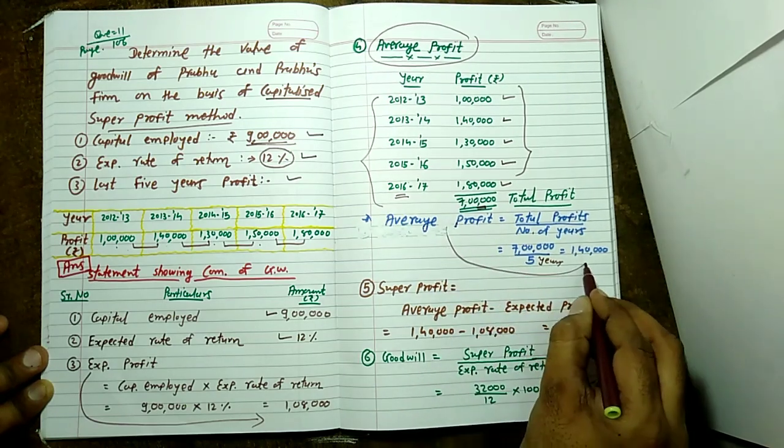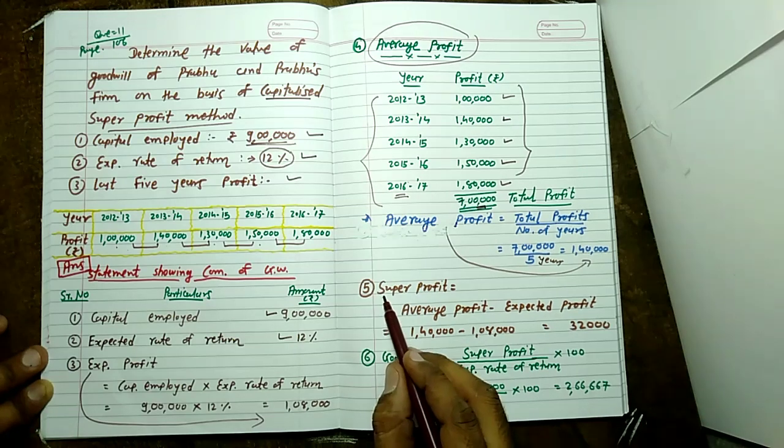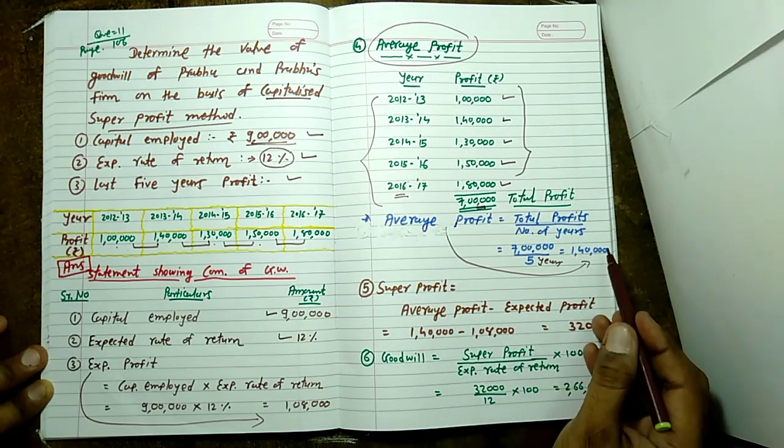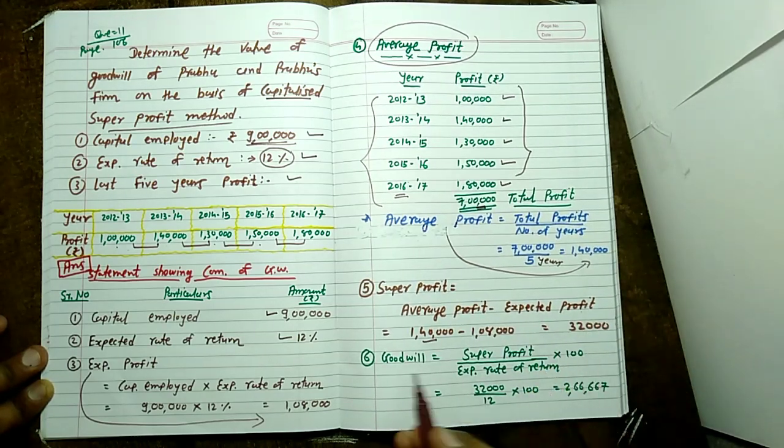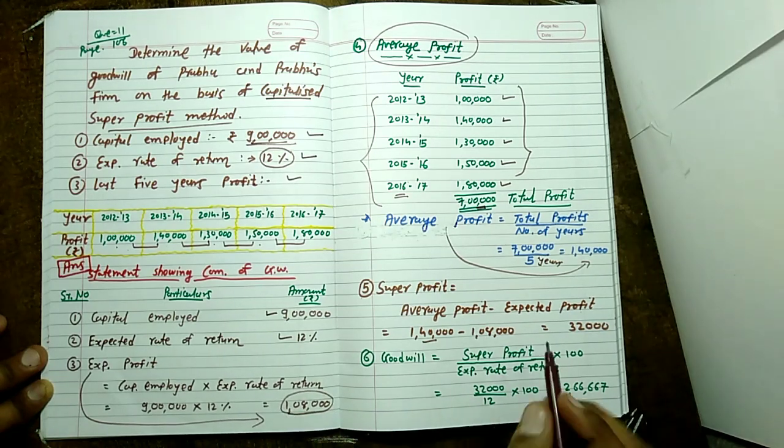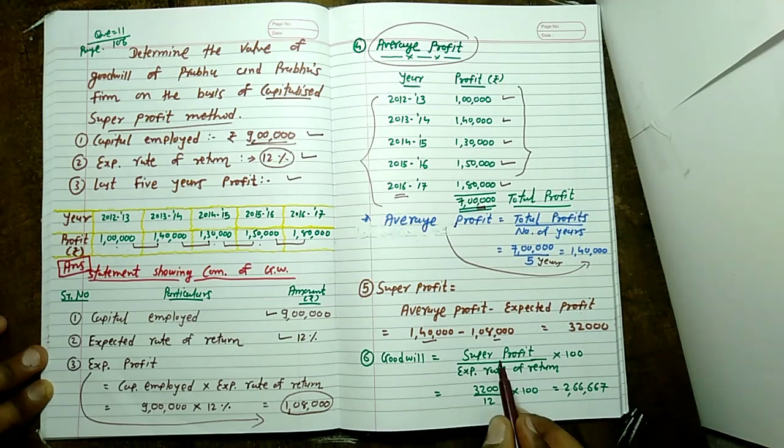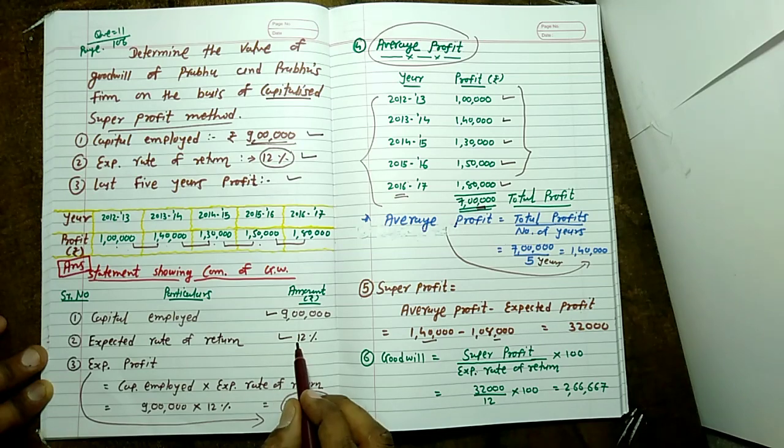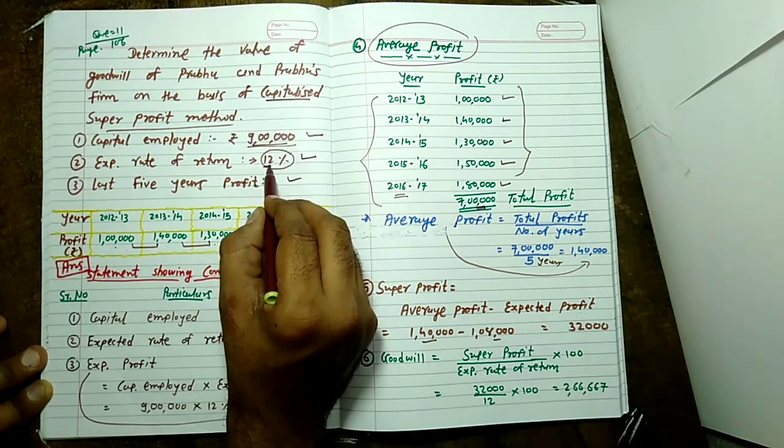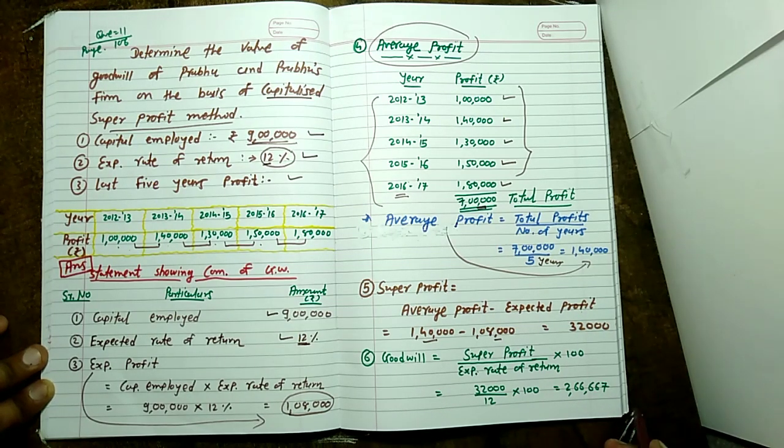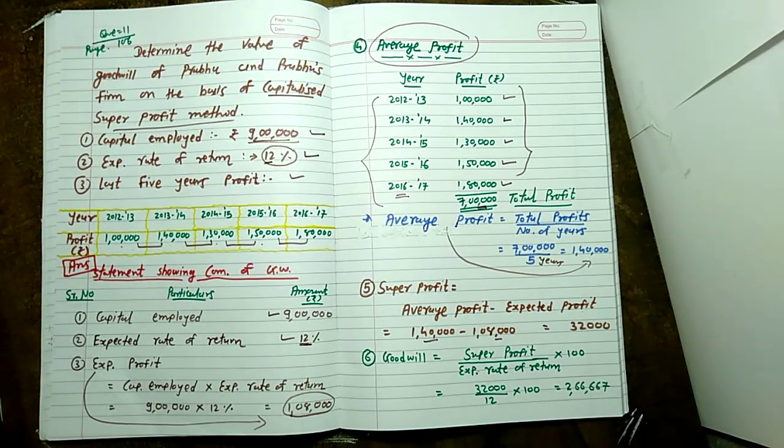Super profit step number five formula: average profit minus expected profit. 1 lakh 40,000 minus 1 lakh 8,000 expected profit equals 32,000. And your last step: goodwill equals super profit upon expected rate of return into 100. Super profit 32,000, expected rate of return 12 percent. 32,000 upon 12 into 100 equals 2 lakh 66,667.